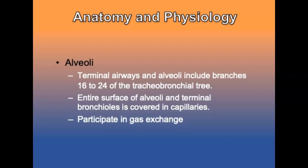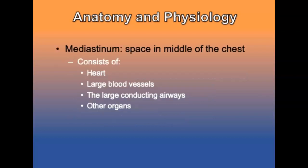The terminal airways and alveoli include branches 16 to 24 of the tracheobronchial tree. The entire surface of the alveoli and terminal bronchioles is covered in capillaries and participates in gas exchange. The mediastinum is a space in the middle of the chest consisting of the heart, large blood vessels, the trachea and main stem bronchi, and other organs. It may widen if the patient is bleeding from a ruptured aorta and might trap air from a traumatic injury.